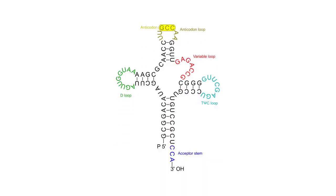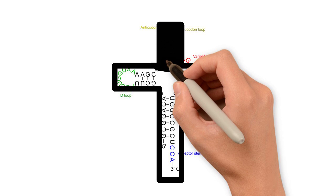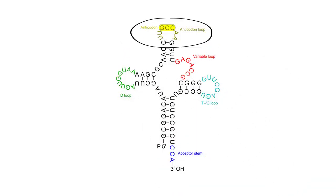A tRNA has a specific structure. In two dimensions, it is similar to a cross, with three loops and one stem. The three loops are called anticodon loop, D loop, and T loop.